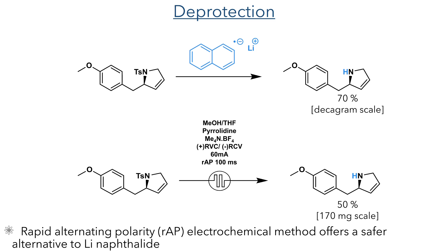As an alternative to this reagent, they also developed a novel electrochemical method to carry out this transformation. This method generates reducing conditions using rapid alternating polarity, and this can cleave the tosyl group in the same manner as the typical Birch conditions. They could generate the compound in a 50% yield using this method; however, this could only be performed on a small scale due to the volume limitations of the Electrosyn reactor used.